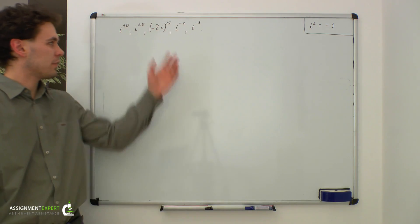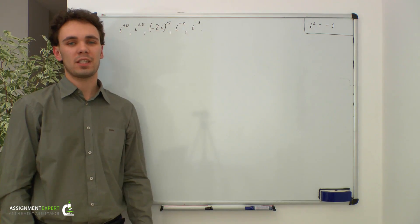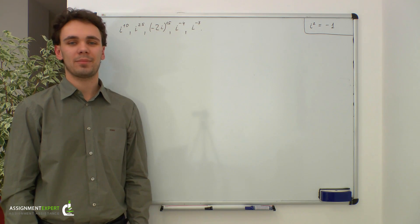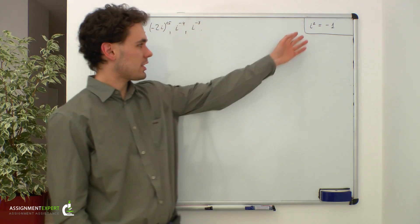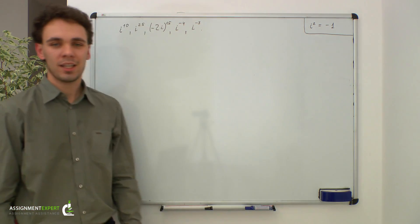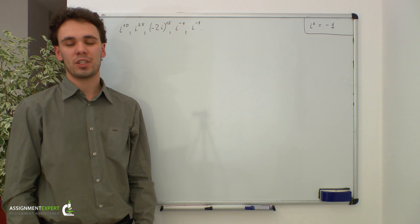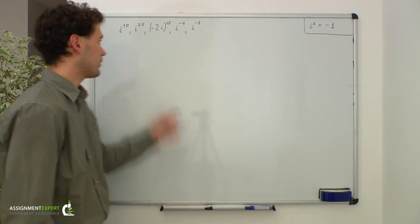Suppose we are given the following expressions, and we have a task to evaluate them. First of all, let's recall that i squared is equal to negative 1. This is enough to start evaluating our expressions. Let's begin with an even power.